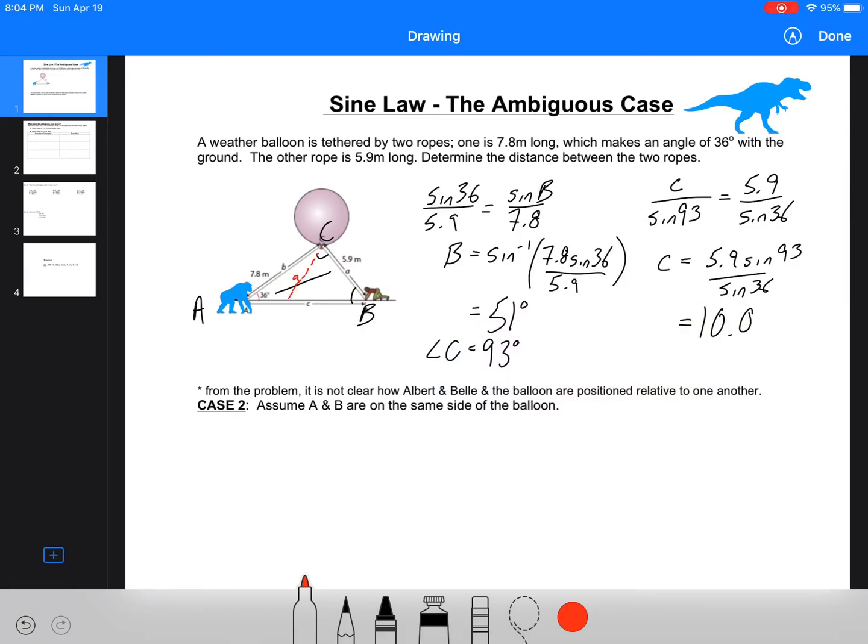That's the most common example. However, what we need to recognize is, what if the triangle looked like this, and that was A. So case two, what if A and B are both on the same side of the triangle? Well, what we need to do is we need to change what angle B was.